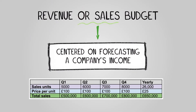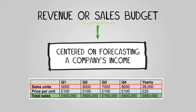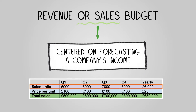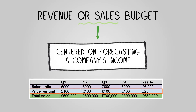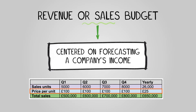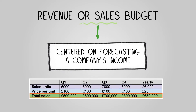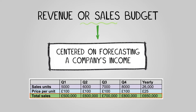The revenue or sales budget is centered on forecasting a company's income. It details sales units — the projected number of products or services to be sold — price per unit, the selling price of each product or service, and total sales, which is calculated by multiplying sales units by the price per unit.